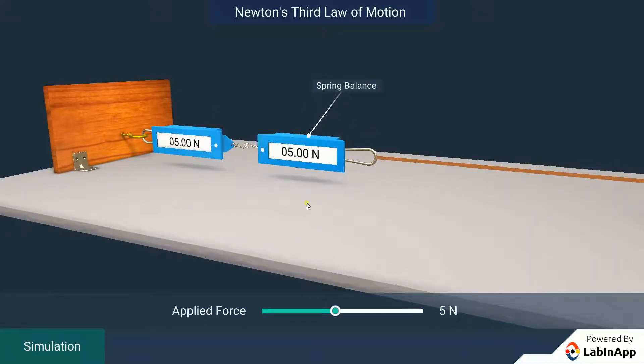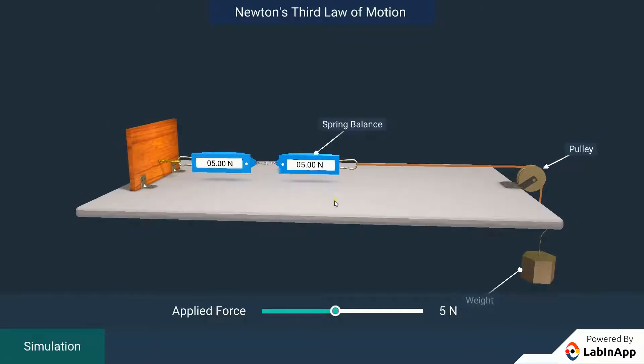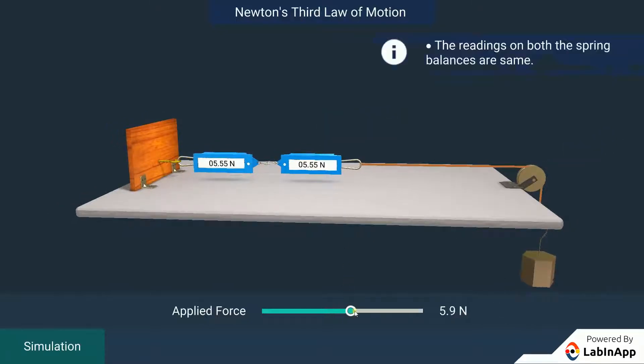Both balances show the same reading. Increase the force applied on the balance by varying the weight on the pan.